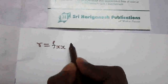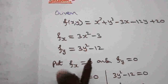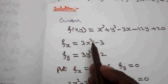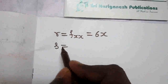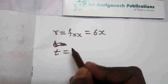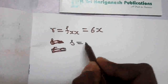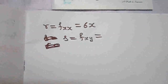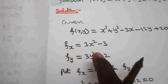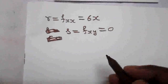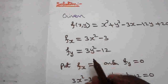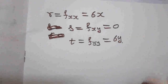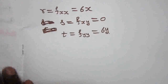For maxima and minima we need r, s, and t. r = fxx: differentiating fx = 3x² − 3 once more with respect to x gives r = 6x. s = fxy: differentiating fx with respect to y gives s = 0. t = fyy: differentiating fy = 3y² − 12 with respect to y gives t = 6y.